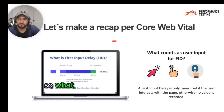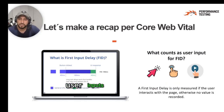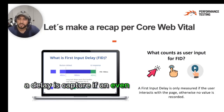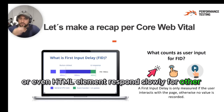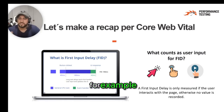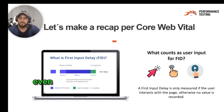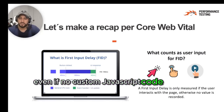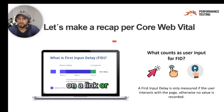So what counts as a user input delay? User inputs include clicks, taps, and key presses. A delay is captured if an event handler is delayed or even HTML elements respond slowly for other reasons. For example, clicking on a text input requires the page's main thread to be idle, even if no custom JavaScript code runs in response to the click. This also applies when clicking on a link or a dropdown.